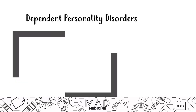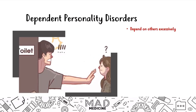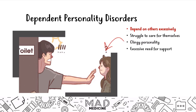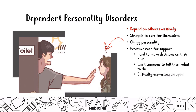The next disorder is dependent personality disorder. These patients are dependent on others excessively to the point where they shouldn't be — for example, a 30-year-old man who is very dependent on his partner to the point where he can't do anything without his partner's help and supervision. They struggle to take care of themselves and are very clingy. They have an excessive need for support and positive reinforcement, which makes it difficult for them to make decisions on their own — any decision at all. They ask their partner to make decisions for them and just want someone to tell them what to do.